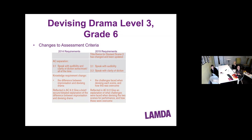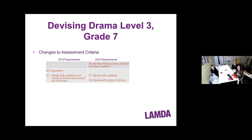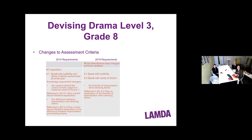For Grade 6 devising, the title and theme for Devising 2 has been updated, assessment criteria separated, and learners will be asked 'the challenges faced when devising each scene and how this was overcome,' rather than the difference between improvisation and devising drama. For Grade 7, the only changes are separation of assessment criteria and updated titles and themes. For Grade 8, the knowledge question will now be 'benefits of improvisation when devising drama' — no longer asking about the difference between improvisation and devising. All titles and themes have also been updated.